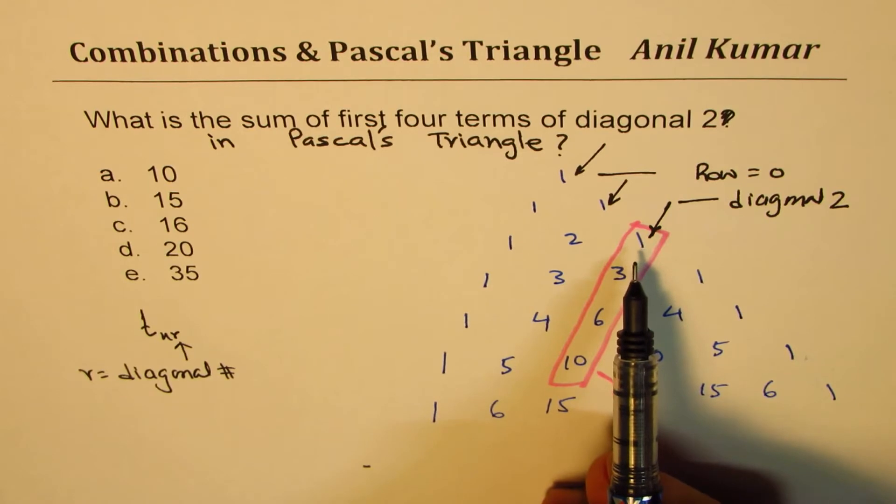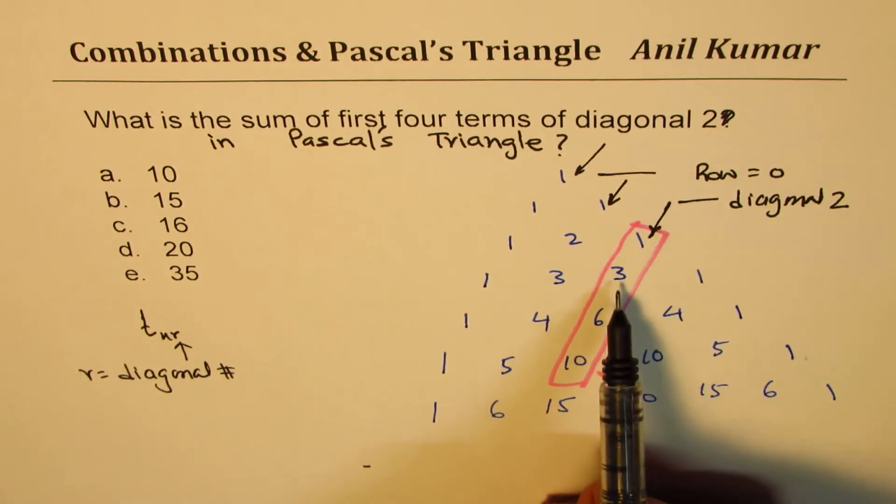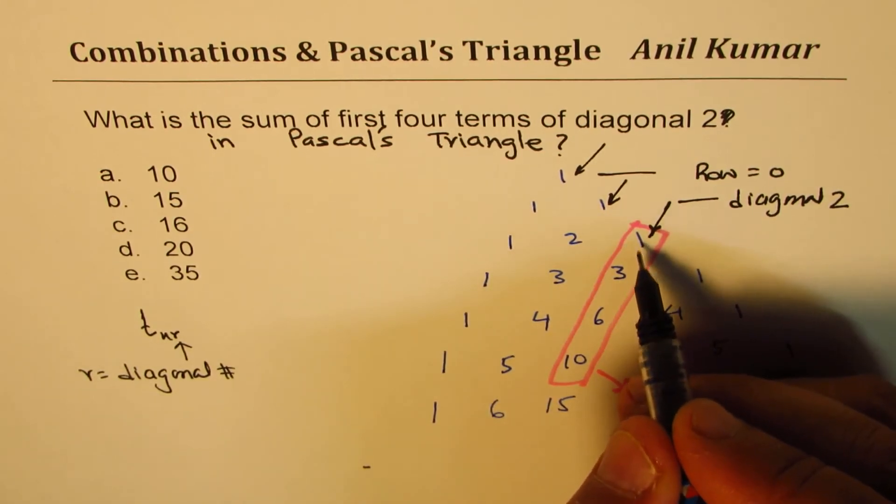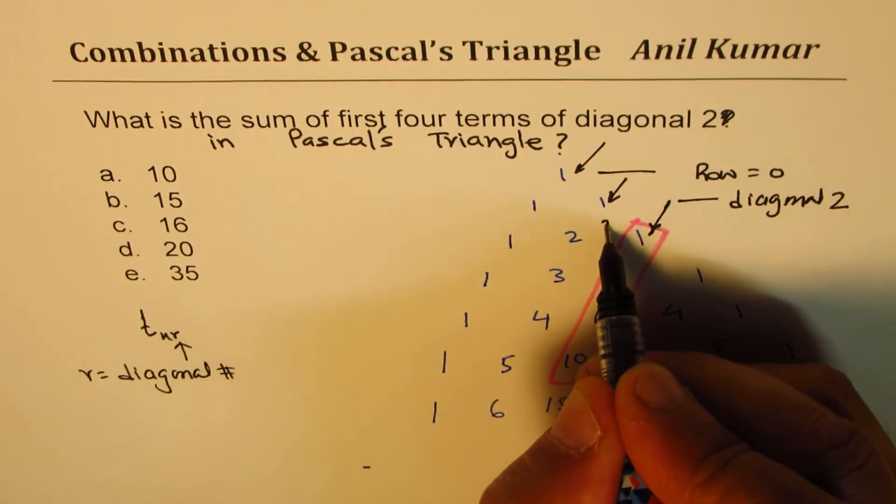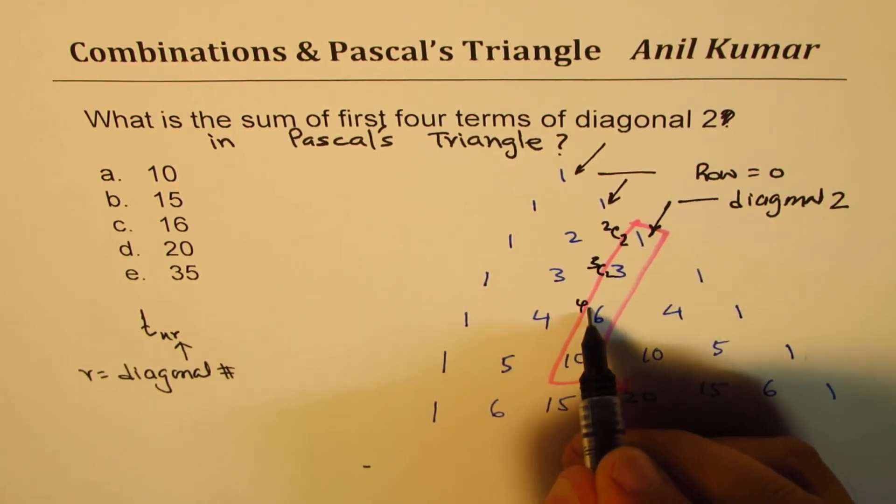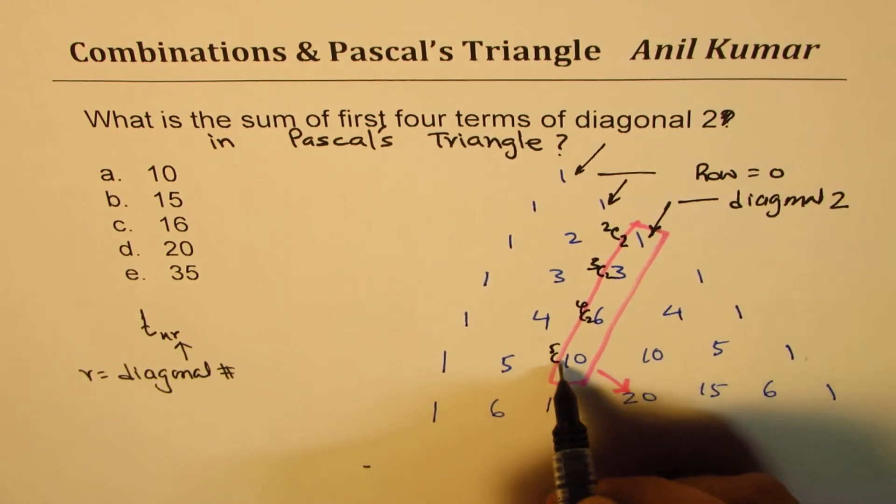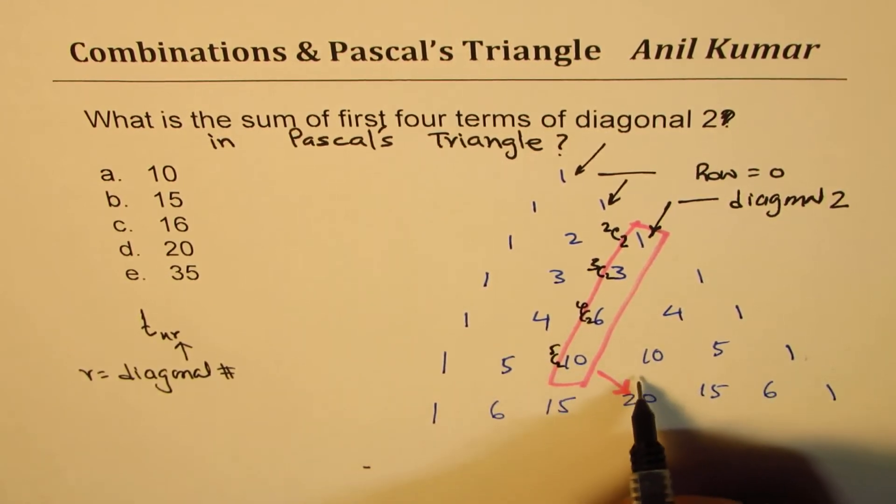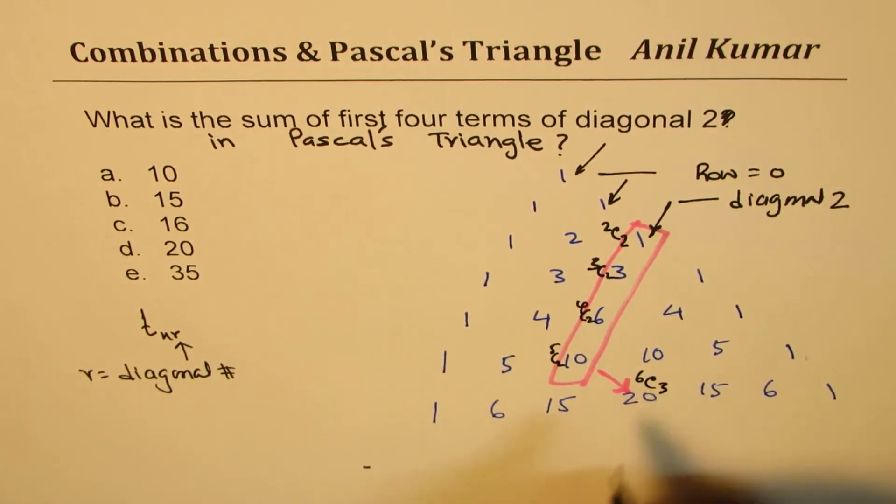So as you go down, diagonal remain same - it is C2, right? This position is 2C2, right? But here it becomes 3C2, 4C2, 5C2, and the answer is 6C3. Do you see that?